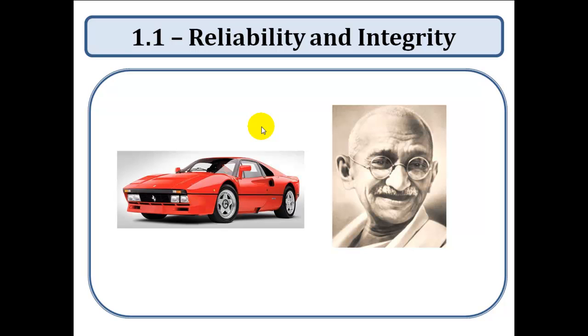The first one is reliability and integrity. Reliability refers to how well a computer system works. Does it function as intended or does it fail and crash every time we try and use it? On the other hand, integrity refers to the correctness of data within the system.